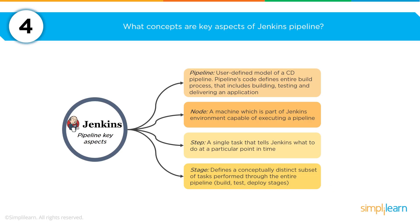When working with Jenkins you'll be asked about the key concepts of a Jenkins pipeline. There are four key areas: pipeline, node, step, and stage. Pipeline refers to the user-defined model of a CD continuous delivery pipeline. Node refers to the machines which are part of the Jenkins environment. Step is a single task that tells Jenkins what to do at a particular point in time. Stage defines a conceptually distinct subset of tasks — such as build, test, and deploy — performed through the entire pipeline.